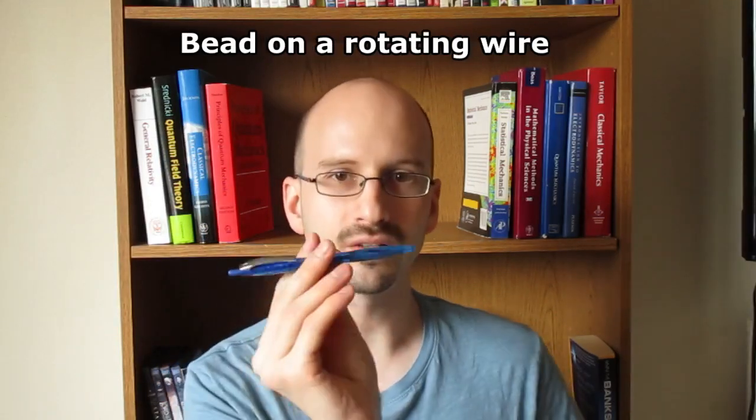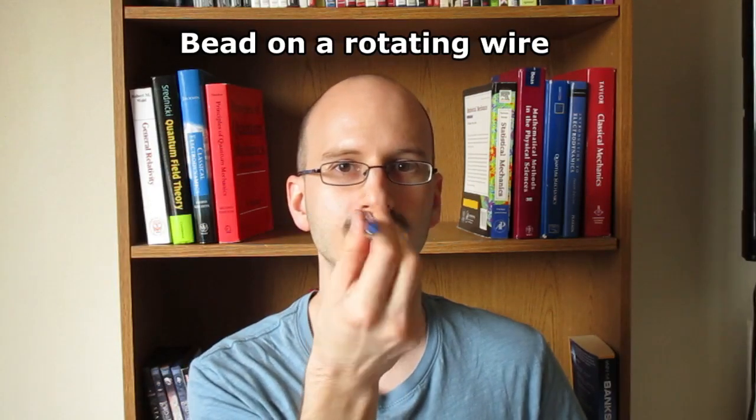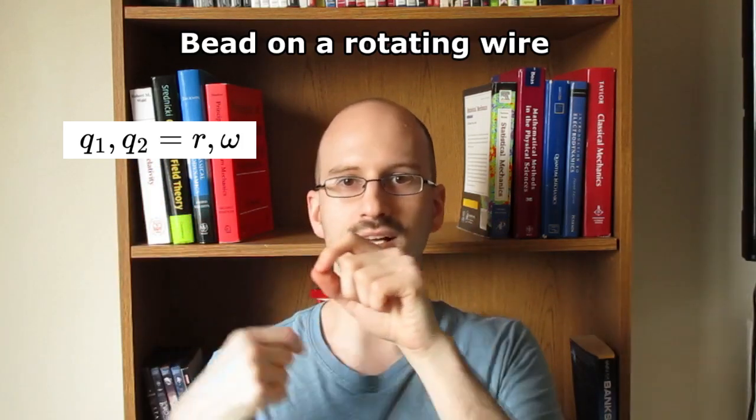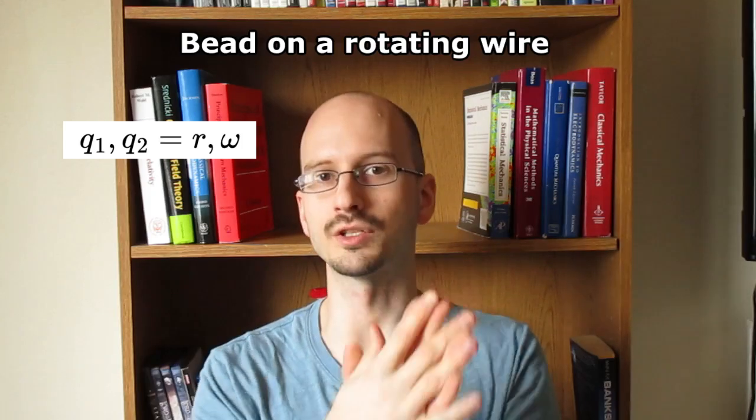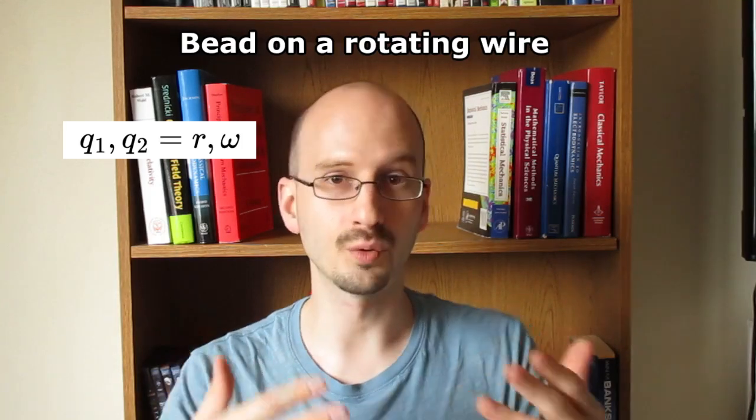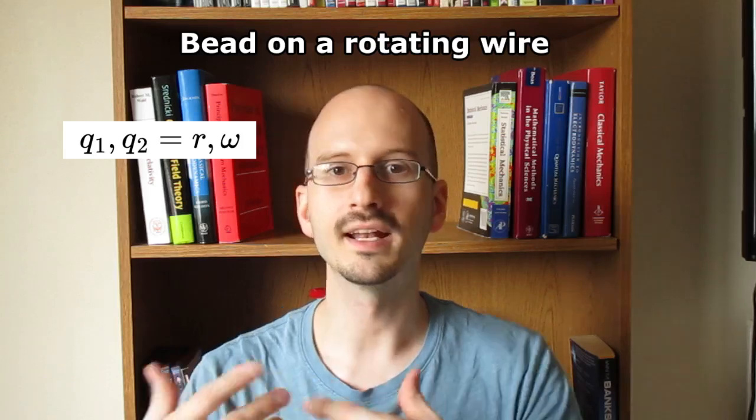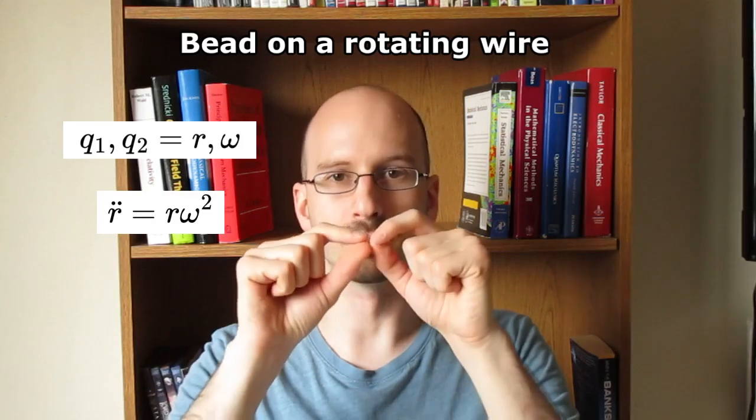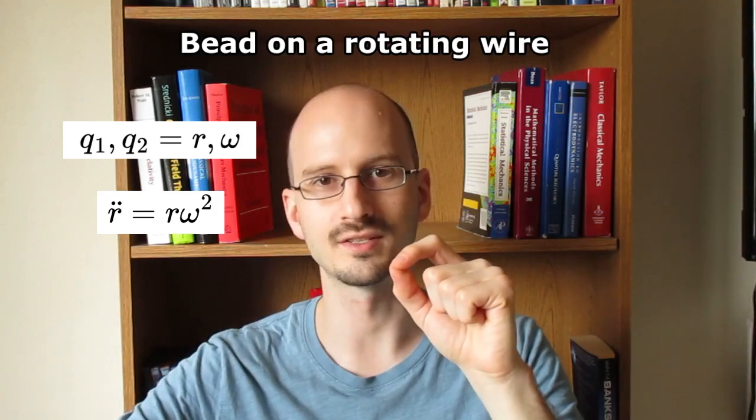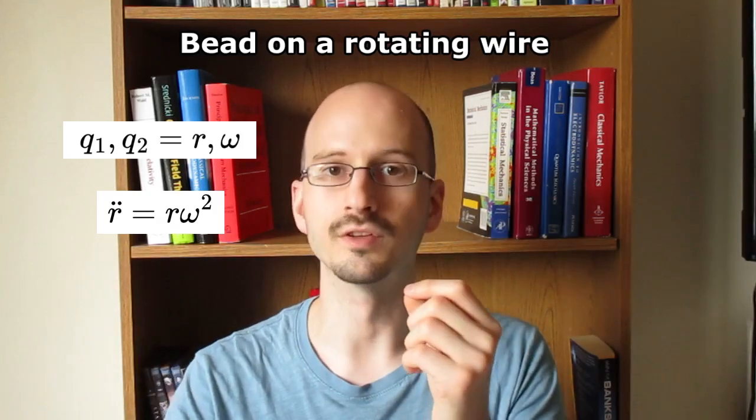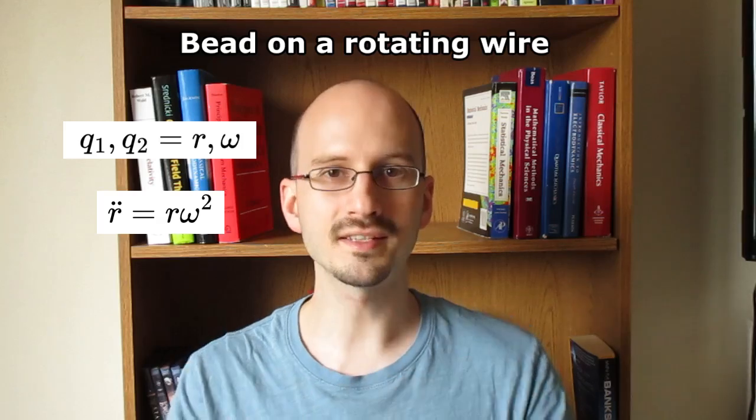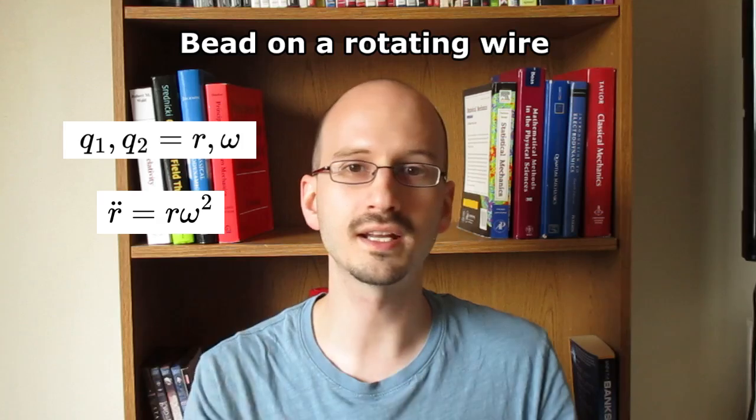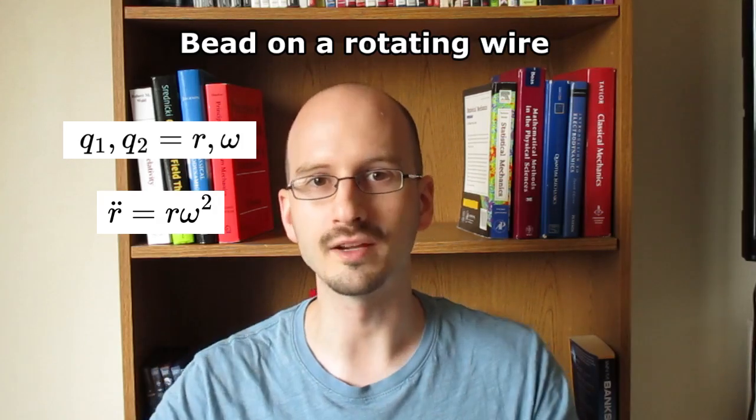Example four, we have an infinitely long wire that's rotating. The generalized coordinates are distance from the axis and angular velocity, so the speed of rotation. The speed is a coordinate, not a derivative of the coordinate. And after putting it through Lagrange's equations, we find out that the bead will accelerate away from the axis of rotation faster the farther away it gets. This is centrifugal force. If something is free to move on an object that is rotating, it's going to be flung away from the axis.